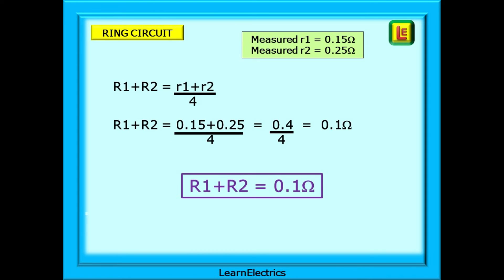Let's look at how we get big r1 plus big r2. R1 plus r2 is calculated by adding together little r1 and little r2 and then dividing by 4. A ring circuit is a parallel circuit. In this example, little r1 is 0.15 ohms and little r2 is 0.25 ohms. 0.15 plus 0.25 is 0.4, and if we divide this by 4, we have an effective resistance of 0.1 ohms. Big r1 plus r2 for this circuit is 0.1 ohms.